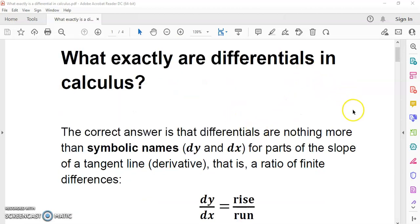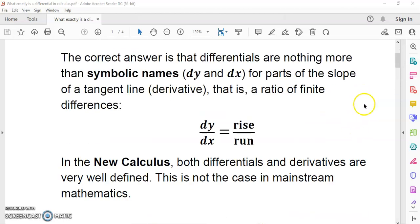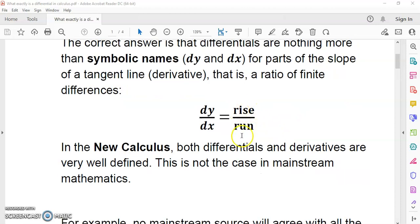Now, the correct answer is that differentials are nothing more than symbolic names, such as dy, dx, dt, dw, for the parts of the slope of a tangent line, which is also called a derivative. That is, it's just a ratio of finite differences. In other words, rise over run. So dy over dx is equal to rise over run of the tangent line.